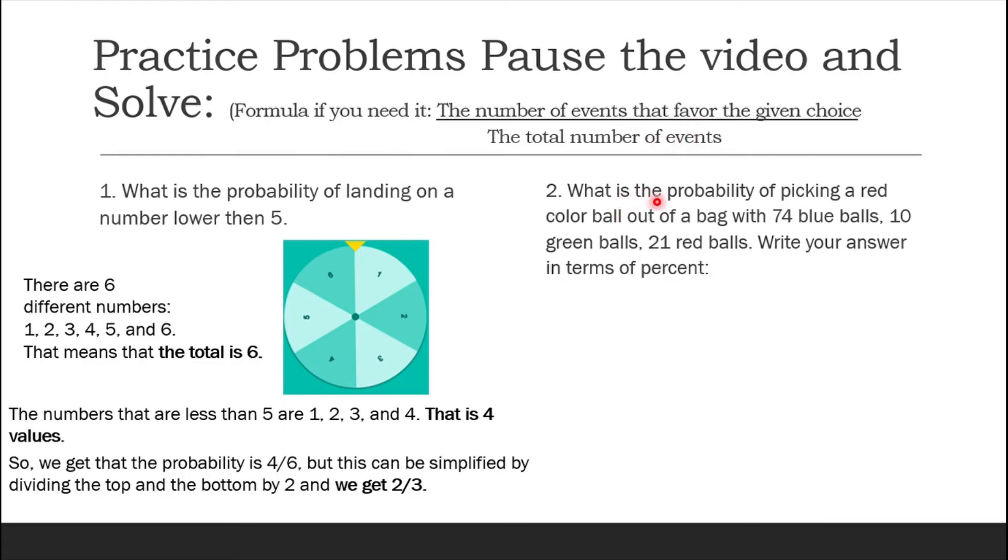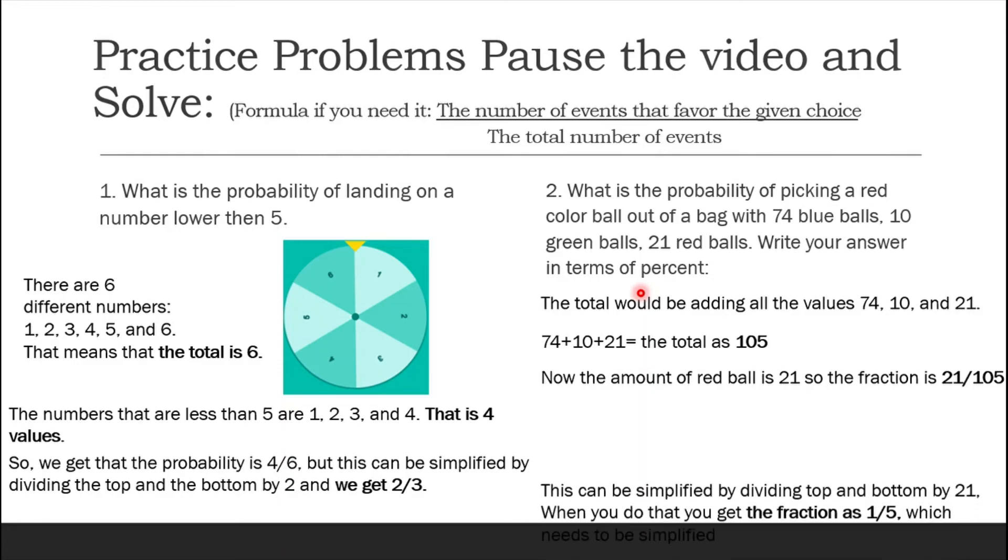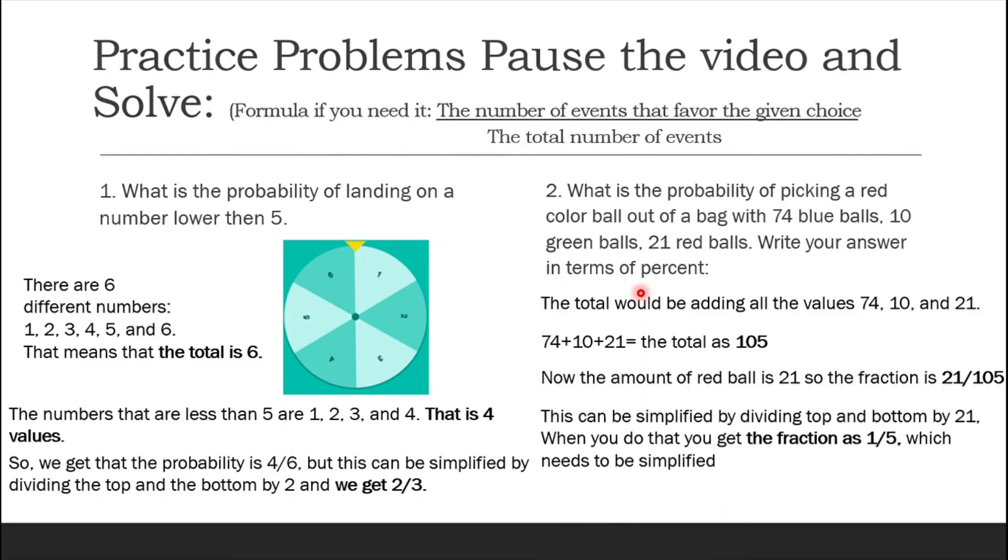Number 2. What is the probability of picking a red colored ball out of a bag with 74 blue balls, 10 green balls, and 21 red balls? Write your answer in terms of percent. The total would be adding all the values 74, 10, and 21. 74 plus 10 plus 21 equals the total as 105. Now the amount of red balls is 21. So the fraction is 21 out of 105. This can be simplified by dividing the top and bottom by 21. When you do that you get the fraction as 1 over 5.